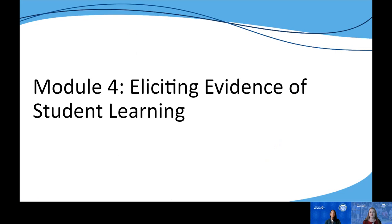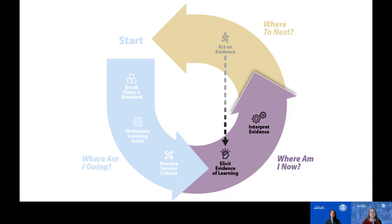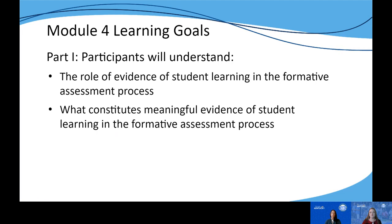Module four continues to build on module three and focuses on eliciting evidence of student learning. Once students have an understanding of where they are headed — the learning goals and success criteria that will tell them when they get there — we are helping students answer the question of where am I now? The learning goals for part one of module four are for participants to understand the role that evidence of student learning plays in the formative assessment process, as well as what constitutes meaningful evidence of student learning.